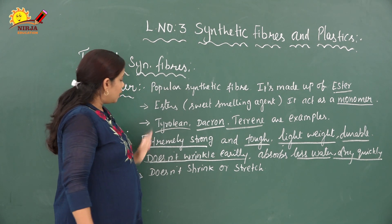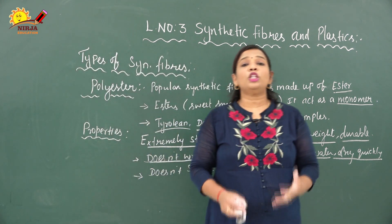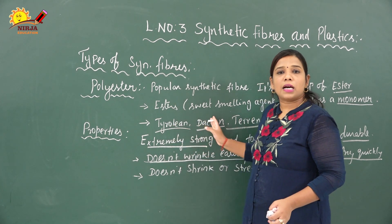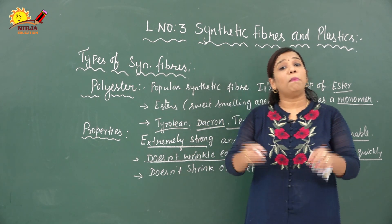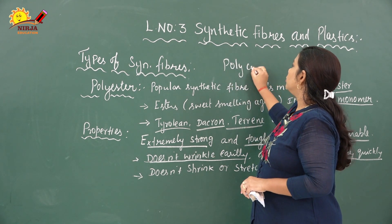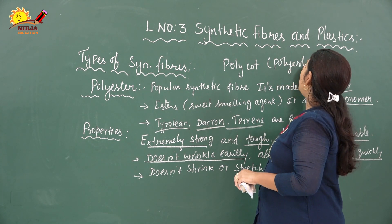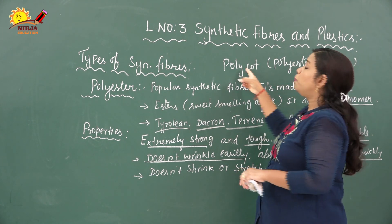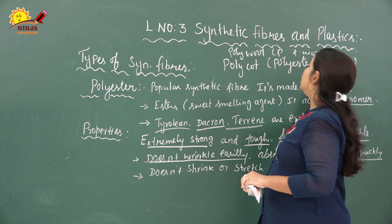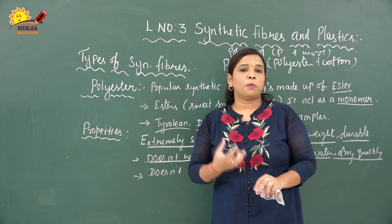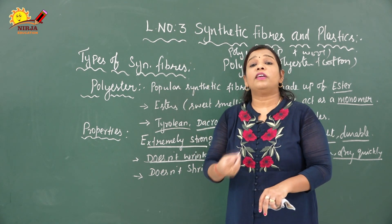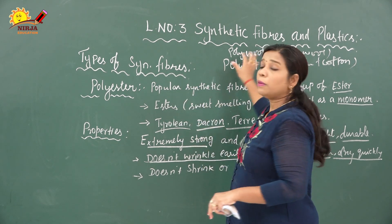Apart from these varieties like terylene, dacron, and terrine, polyester can also be blended with other fibers including natural fibers. For example, polyester combined with cotton is called polycot, and polyester combined with wool is called poly wool. This is a specialty of polyester — it can be mixed with natural fibers to obtain new fiber characteristics.